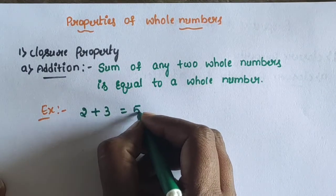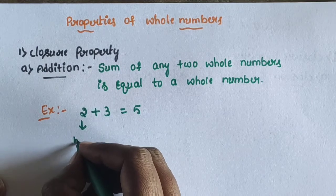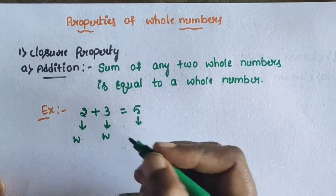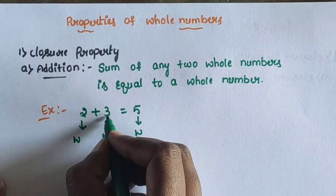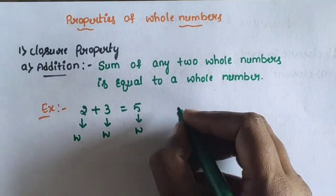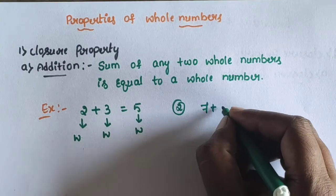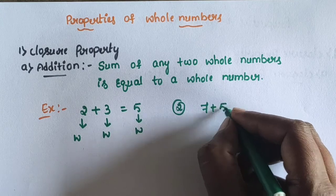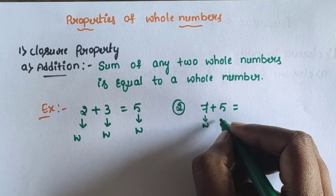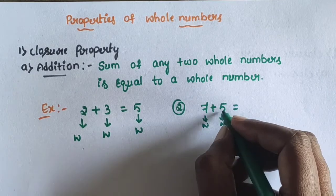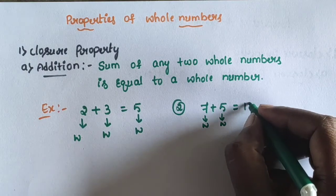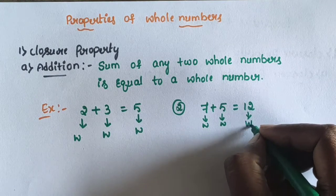For example, 2 plus 3 is equal to 5. 2 is a whole number, 3 is a whole number, and 5 is also a whole number. The sum of 2 whole numbers is equal to a whole number. Another example: 7 plus 5 equals 12. 7 is a whole number, 5 is a whole number, and 12 is also a whole number.